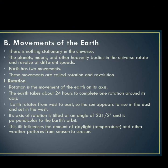The earth's axis of rotation is tilted at an angle of 23.5 degrees, and it is perpendicular to the earth's orbit. The tilt of the axis influences the amount of daylight, temperature, and other weather patterns from season to season.